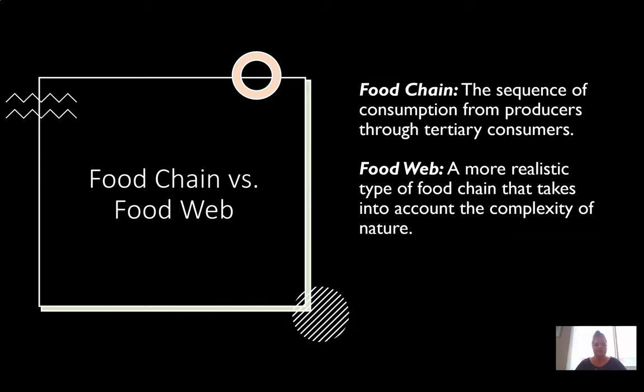Looking at a food chain versus a food web, food chain is the sequence of consumption from producers through tertiary consumers. It's a stepwise process, whereas a food web is more realistic, taking into account the complexity of nature. That's like looking at the hyena and saying he's not only a primary and secondary consumer, but also a scavenger.